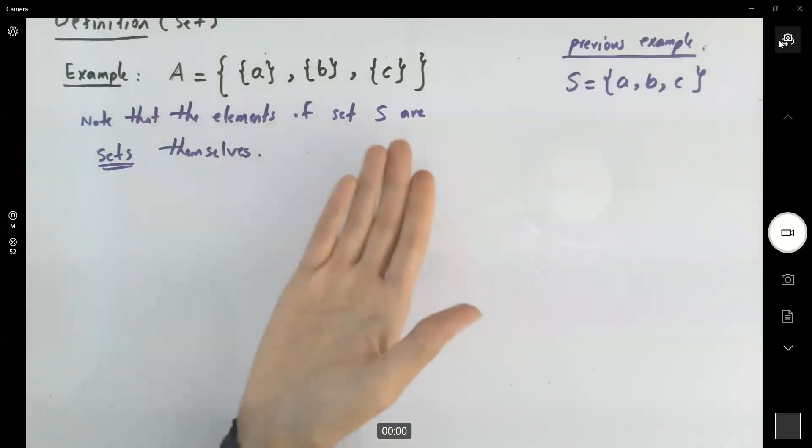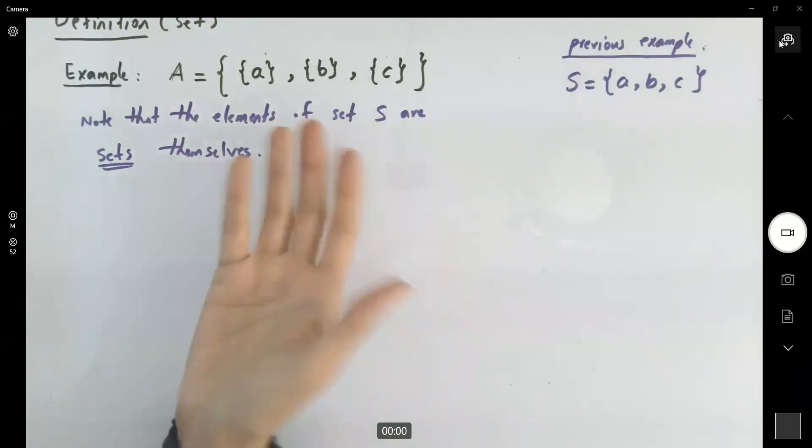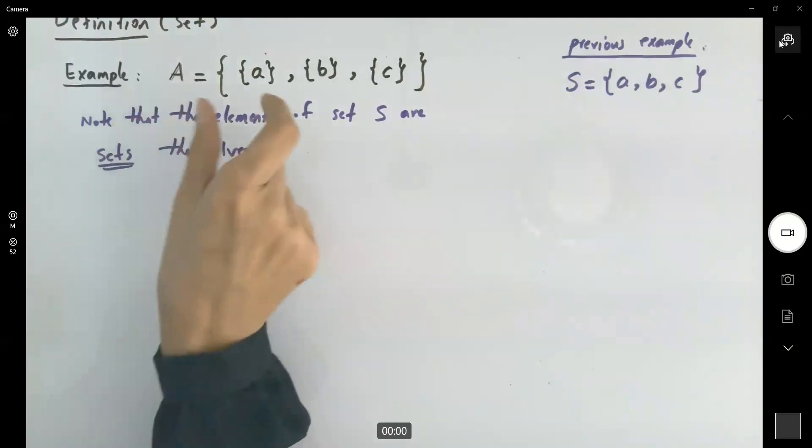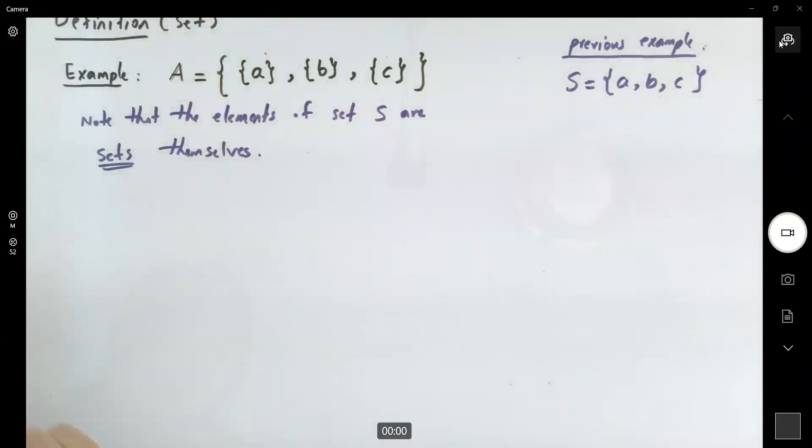So first of all, the very first question that you should be asking is, what is the cardinality of this set? What is the size of this set?